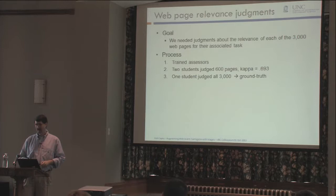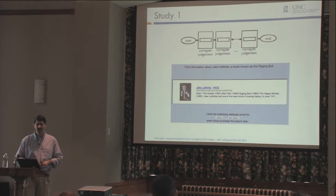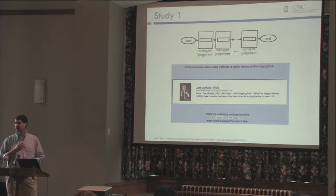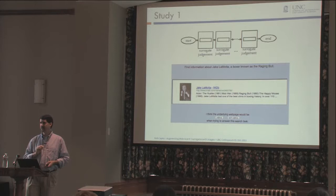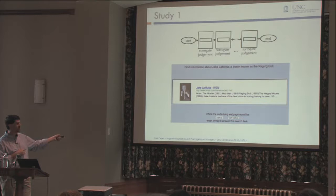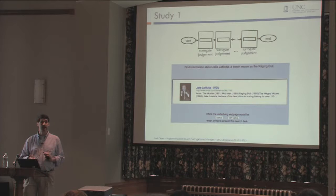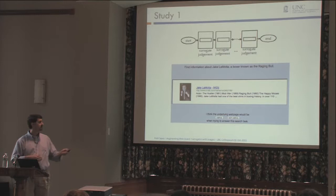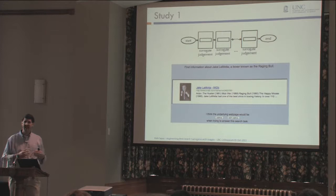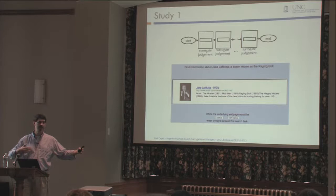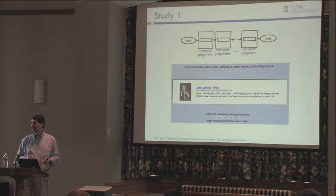In study one, participants came in — we ran this on Mechanical Turk — and they saw individual surrogates and had to make judgments. They were given a task, presented with a surrogate, and asked 'is this useful or not useful for this task?' They made a series of these judgments presented in sets corresponding to a SERP. We had retrieved 10 results for each task and presented those serially. Some cases didn't have images for a page and had to be left out, taking us from 150 tasks down to 128.